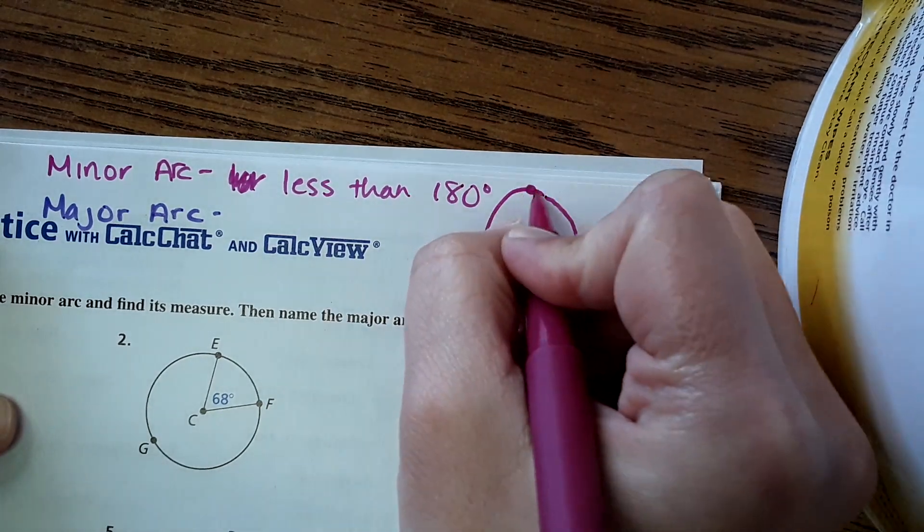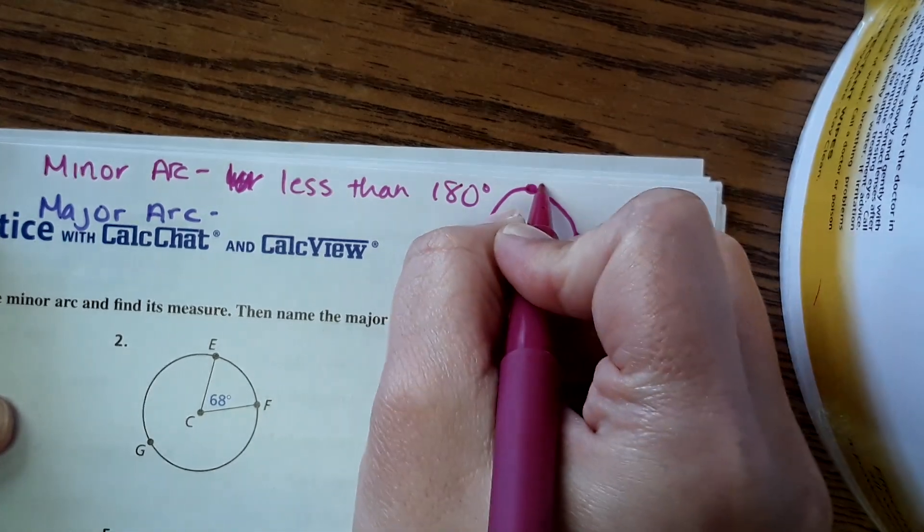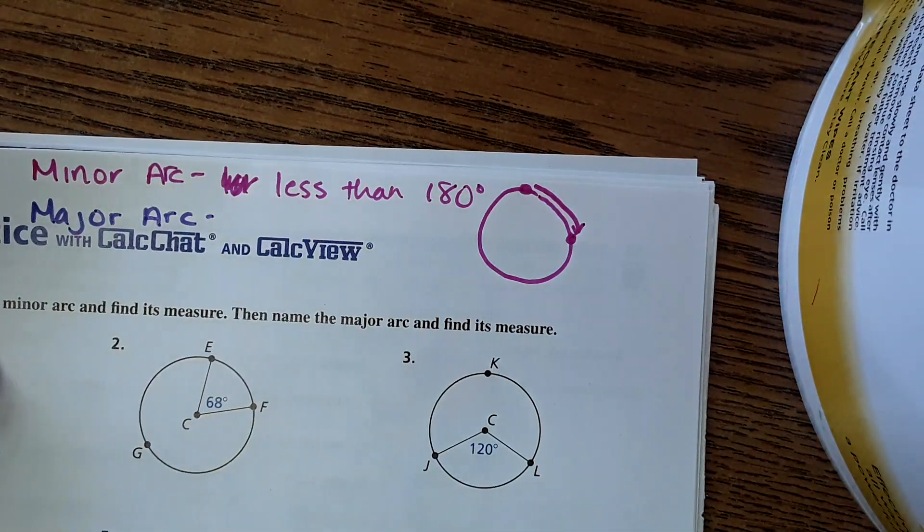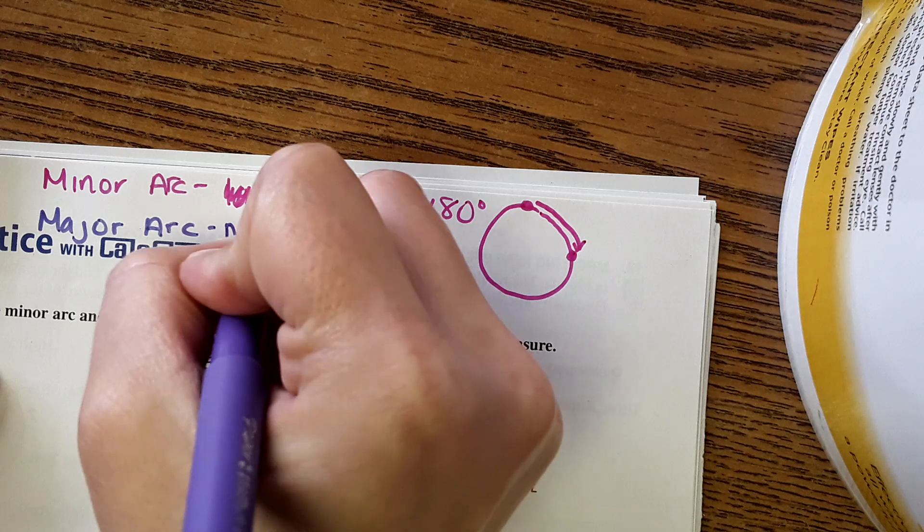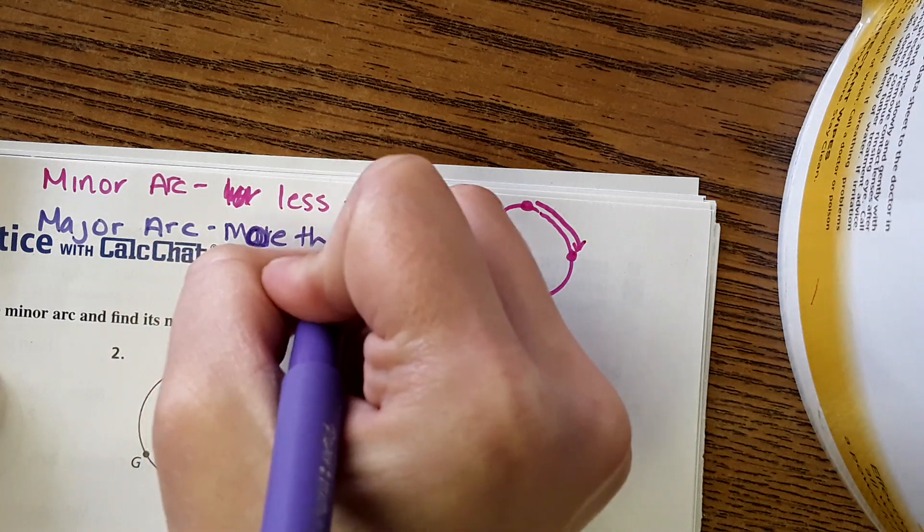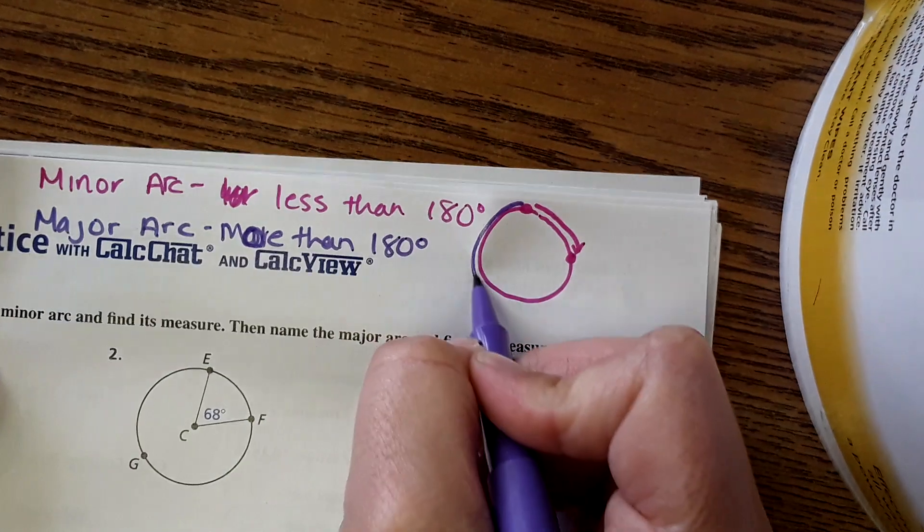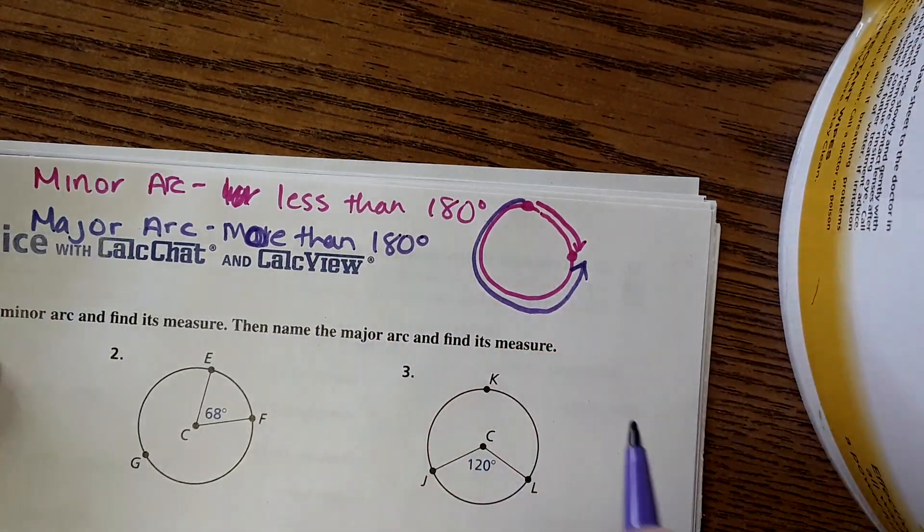The major arc is more than 180 degrees, and so it would be like from here to here, it's more than 180 degrees.